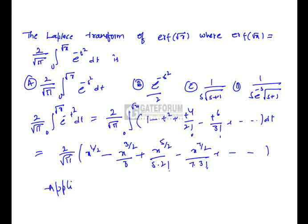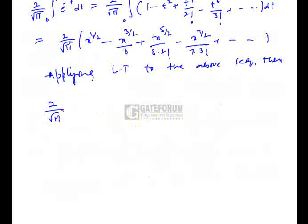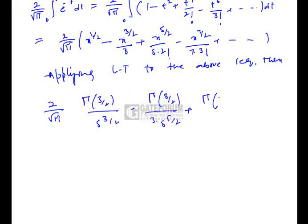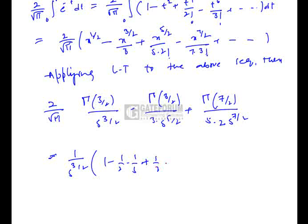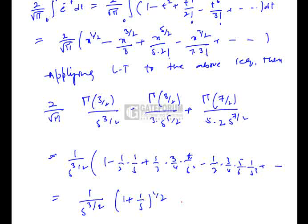Applying the Laplace transform to this series gives (2/√π) · [Γ(3/2)/s^(3/2) − Γ(3/2)/(3·s^(5/2)) + Γ(7/2)/(5·2·s^(7/2)) − ...]. Simplifying further, this becomes (1/s^(3/2)) · [1 − 1/(2s) + 1/(2·3/4·s²) − ...], which equals 1/(s·√(s+1)), so the required answer is option C.